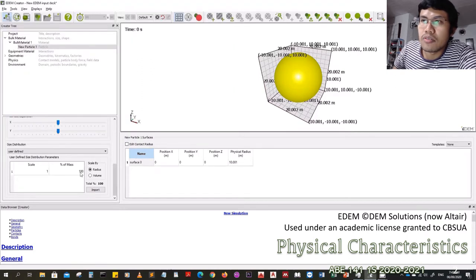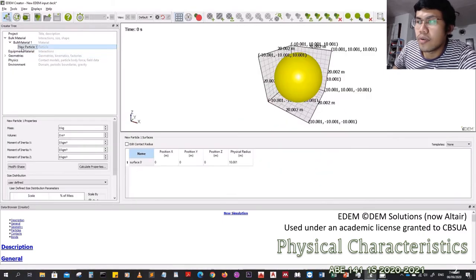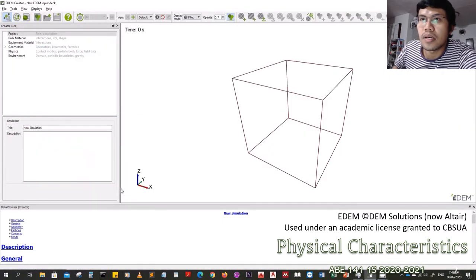Lastly, there's a user defined function that can accept examples like the Rossin-Rambler, Bennett or Gates-Godin-Schumann models. A function with coordinates in an XY format is needed for that user defined function. That's just a very simple introduction to the software using the size input.